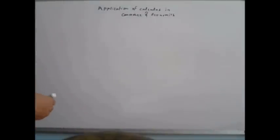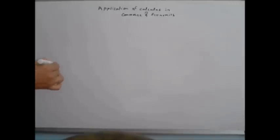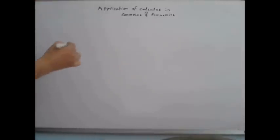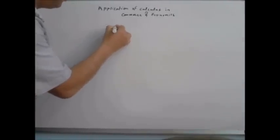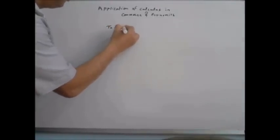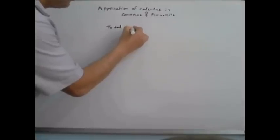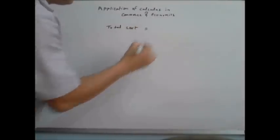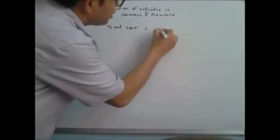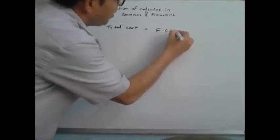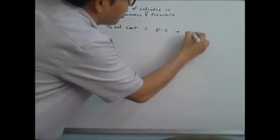Application of Calculus in Commerce and Economics. We are discussing what is total cost. Total cost consists of two items: fixed cost plus variable cost.